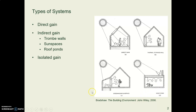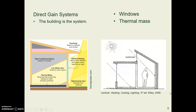Same ideas, different pictures. Direct gain: the sun heats your room directly. Indirect gain: you might have a trombe wall where the thermal mass is between the window and the room, or you might have an attached greenhouse or a sun space. And we'll look at a roof pond, which you may not have seen before.